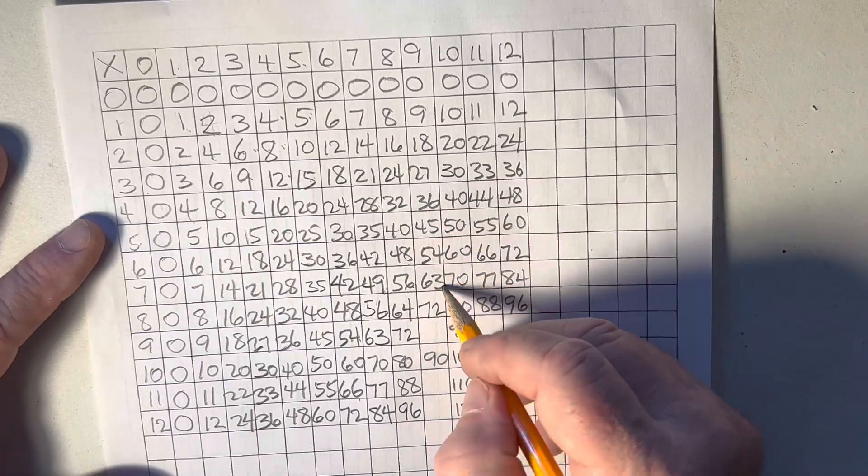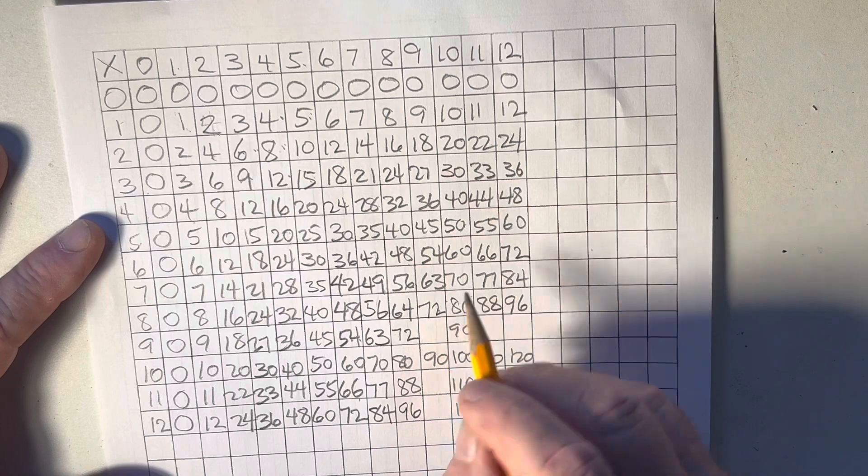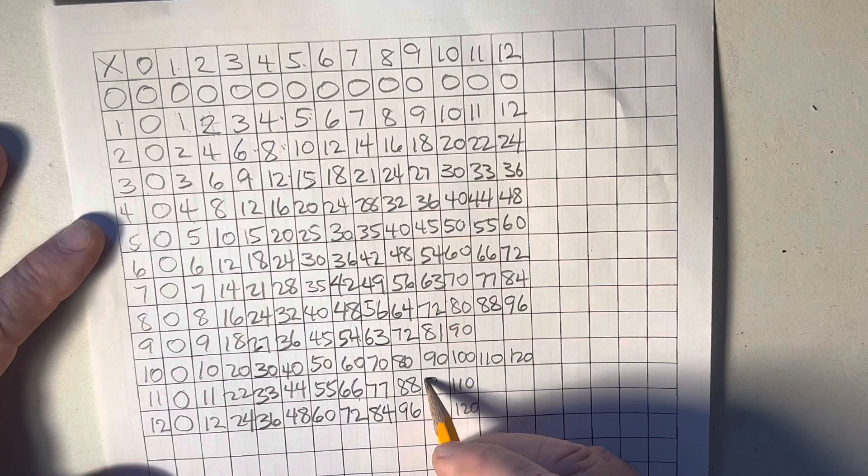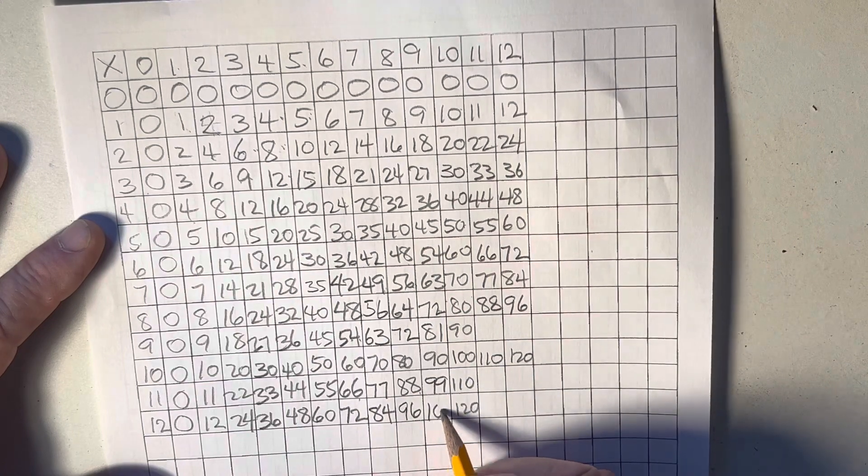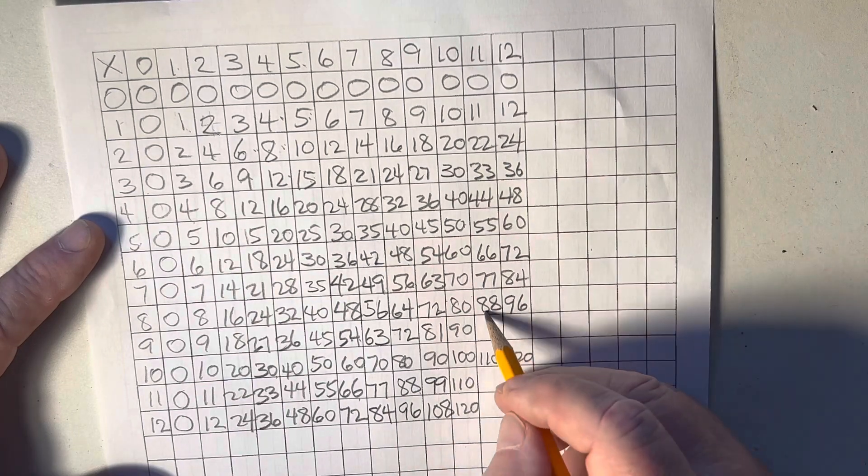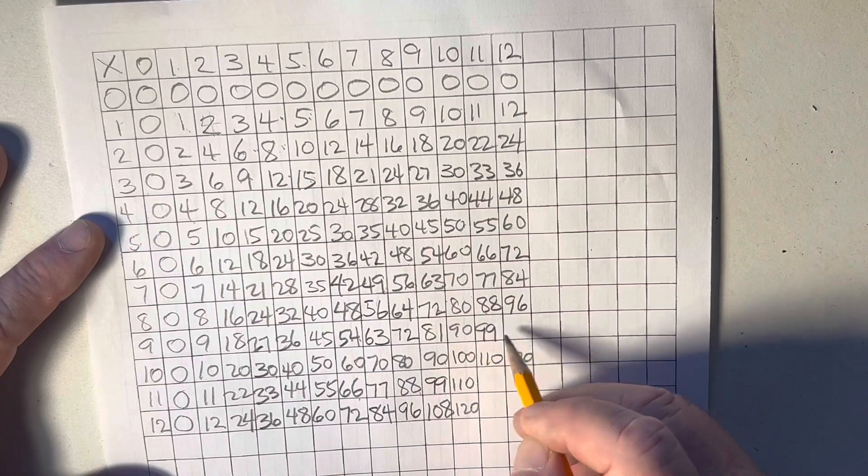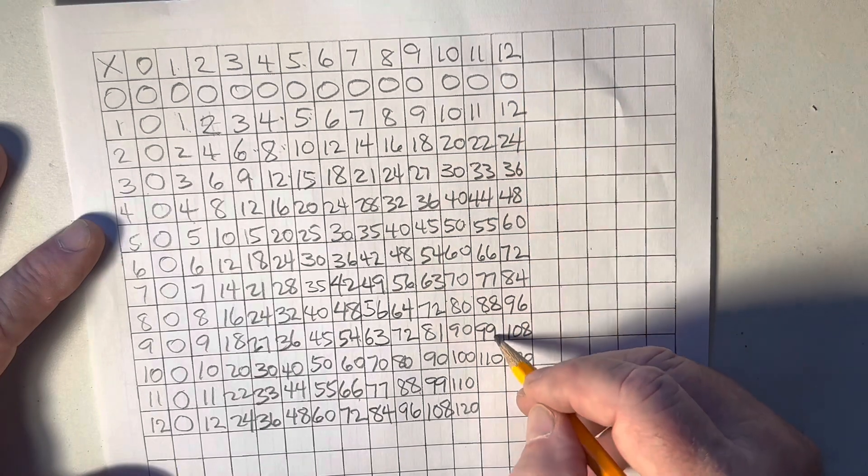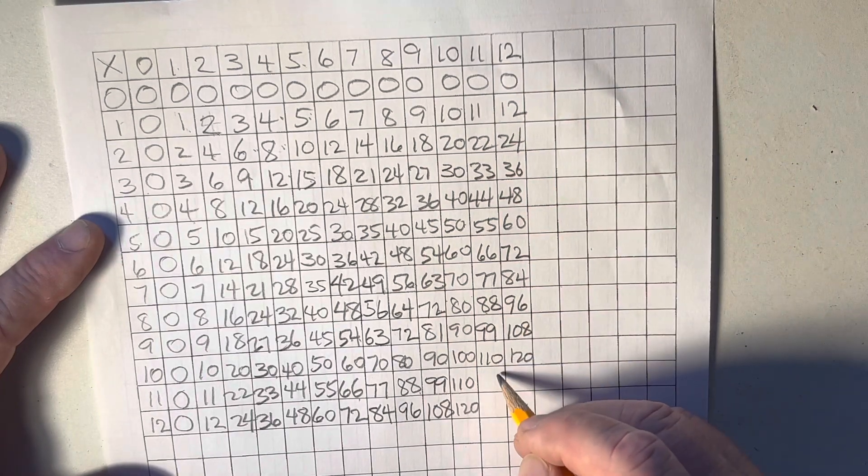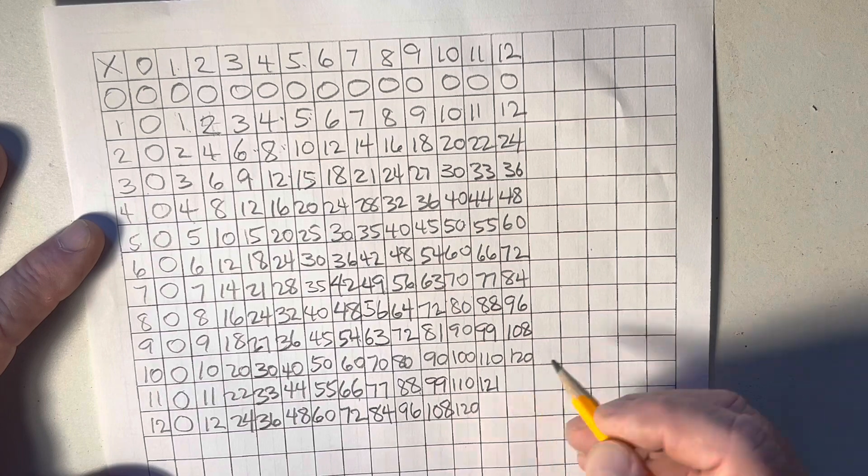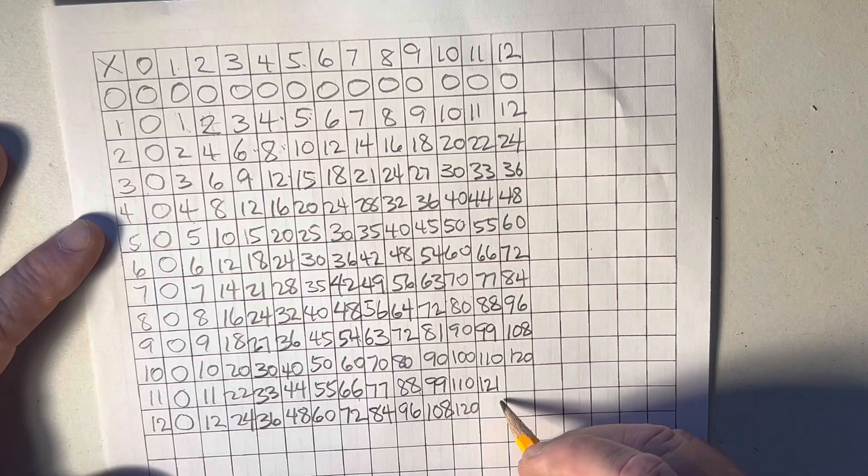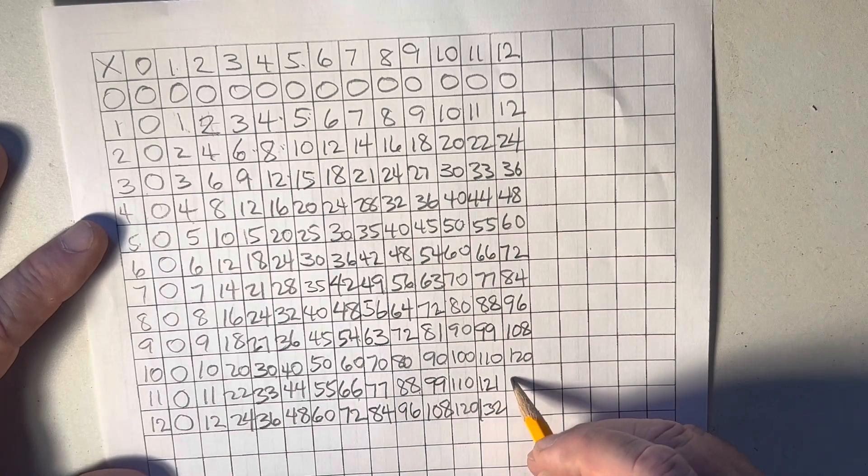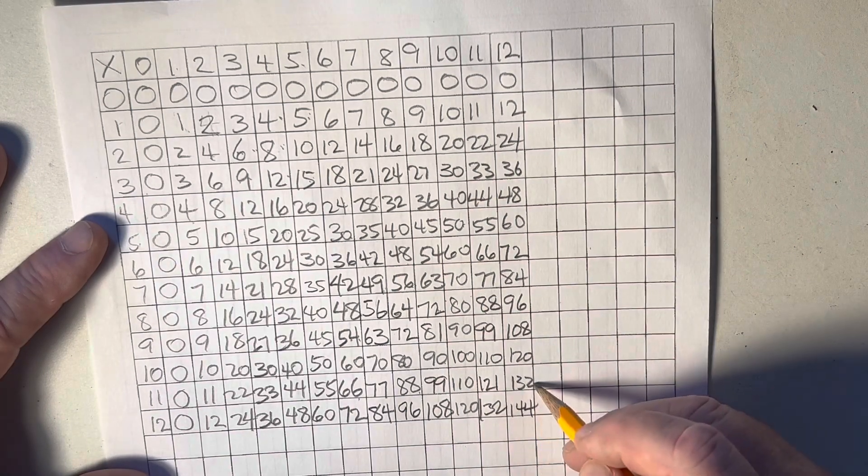Now, we're coming down with 9's here. 63 plus 9 is 72. 72 plus 9 is 81. 81 plus 9 is 90. 90 plus 9 is 99. And then 108. We've got 90, 99, 108. Now, we go over here to 11. 99 plus 11 is 110. 110 plus 11 is 121. And then 121 plus 11 is 132. And then we've got 121, 132. 132 plus 12 is 144. Now, we have our chart complete.